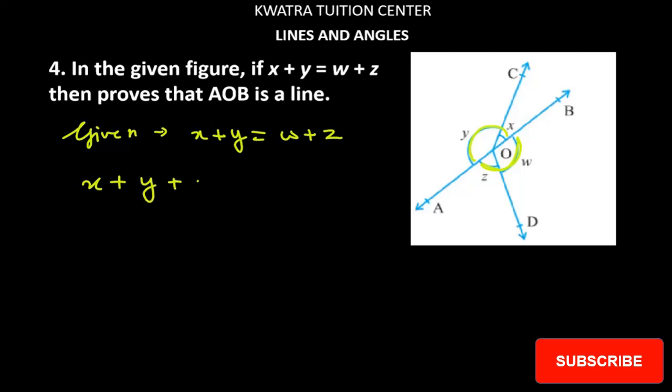So if I get all the angles, x plus y plus w plus z, it is equal to 360. Right? Because we know that sum of whole circle will be 360 degree.